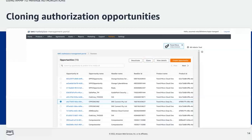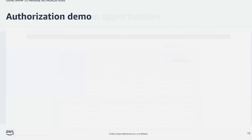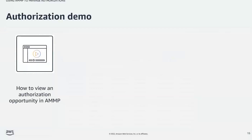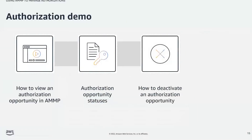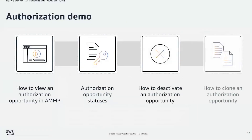Now we'll walk through a few demos that cover the processes we just went over. We will first see how to view an authorization opportunity in the AWS Marketplace Management Portal. Next we will see authorization opportunity statuses. We will then see how to deactivate an authorization opportunity, and finally we will see how to clone an authorization opportunity.